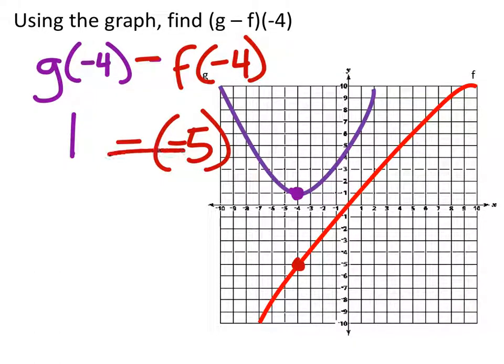So 1 minus negative 5 means we're going to add, and we get 6. So g minus f of negative 4 is positive 6. Since it's subtraction, some of you can look at that and say, 'Well, how far apart are they?' They're six units apart.